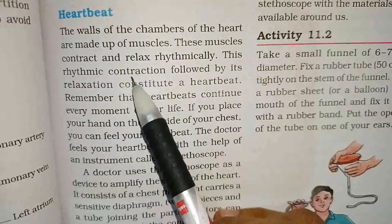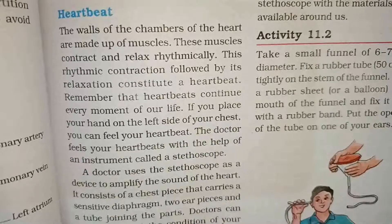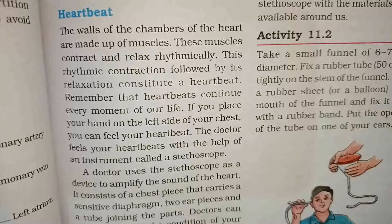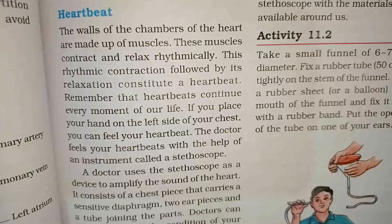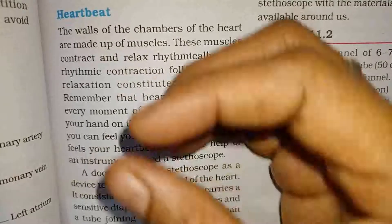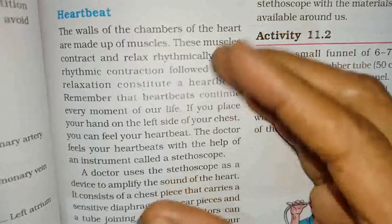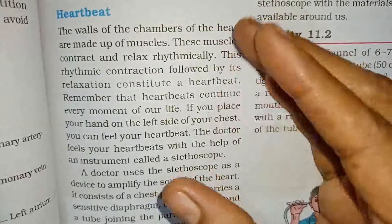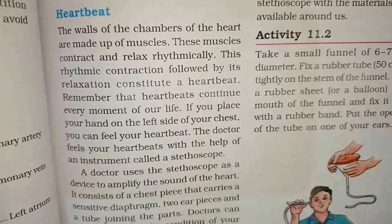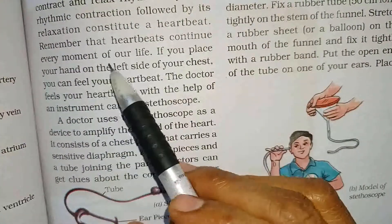These rhythmic contractions followed by relaxation constitute a heartbeat. So when you have a muscle, it contracts and relaxes. This movement is rhythmic — this is the heartbeat. Remember that heartbeats continue every moment of life.